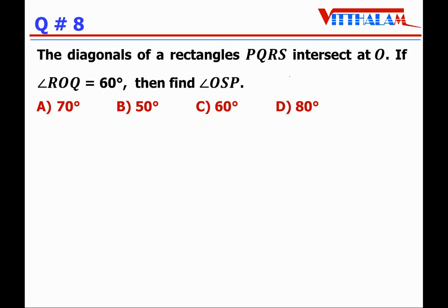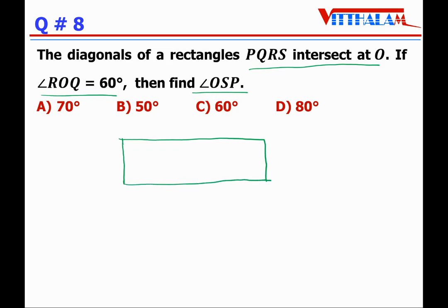Next: The diagonals of rectangle PQRS intersect at O, and angle ROQ = 60 degrees. Find angle OSP. Diagonal QS and PR intersect at O. Angle ROQ = 60 degrees, so angle SOP = 60 degrees (vertically opposite angles). In triangle POS, the sum of angles = 180 degrees.